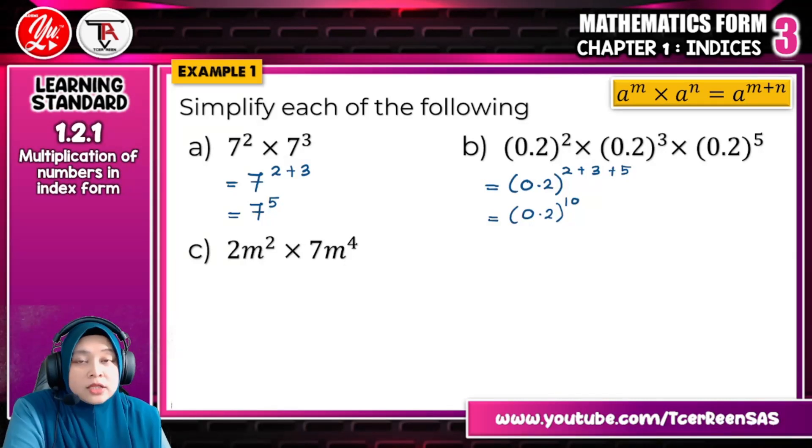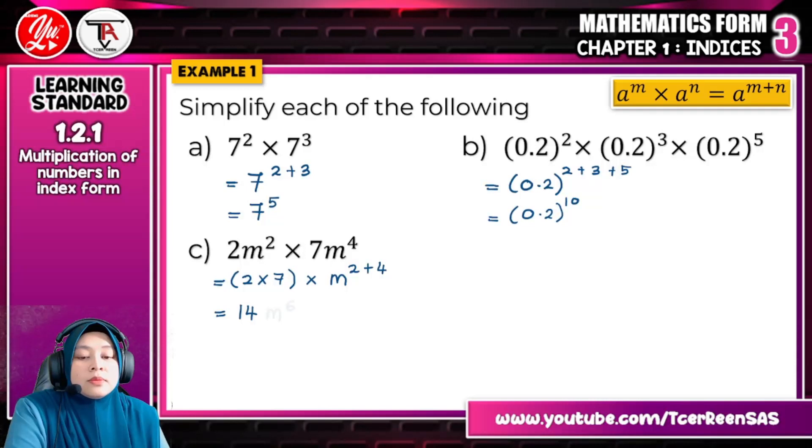So what you should do is, you take the pekali or coefficient first, which is 2 times 7, and then m times m, but m you combine the index, 2 plus 4. 2 plus 4 is 6, right? So 2 times 7, 2 multiplied by 7 means you get 14m to the power of 6. That is the final answer.